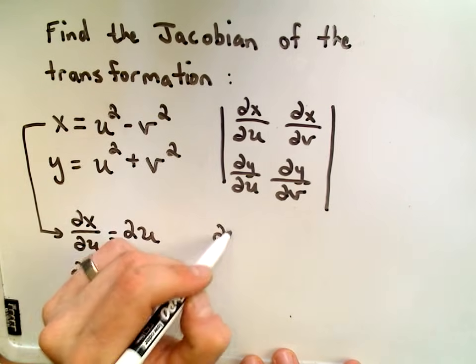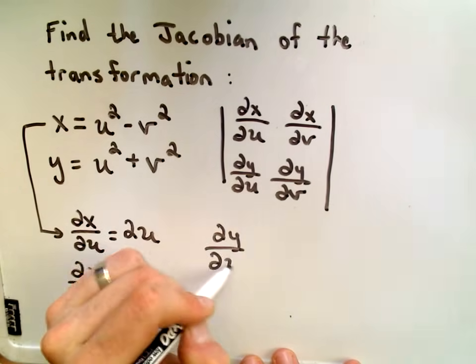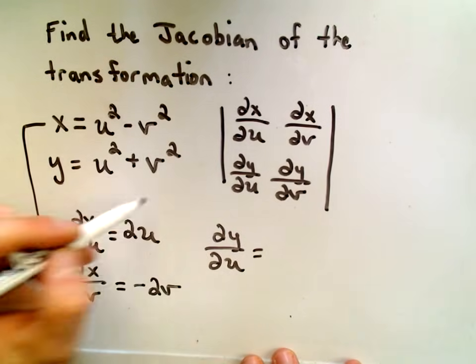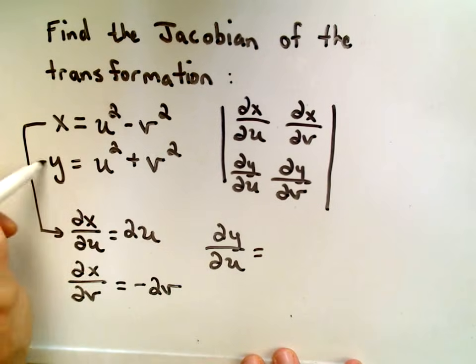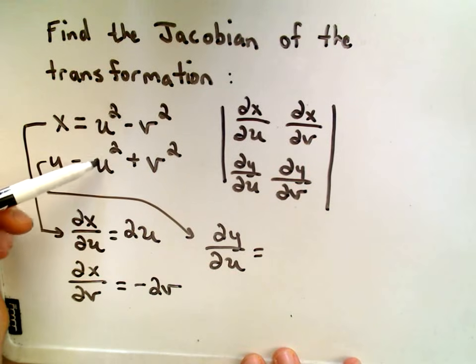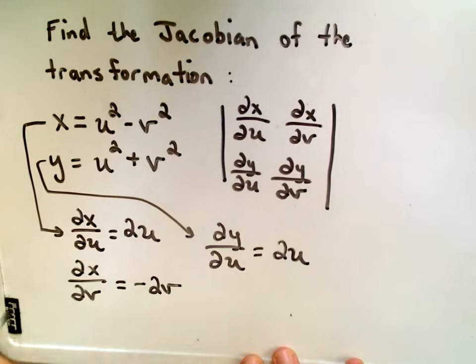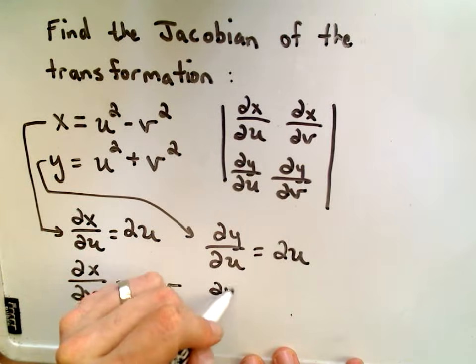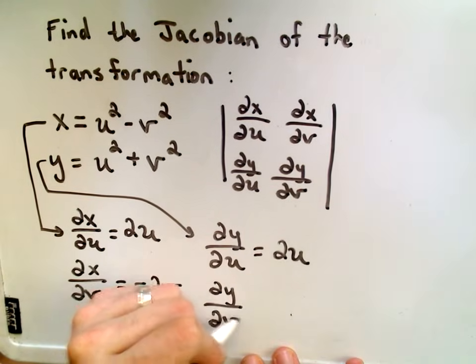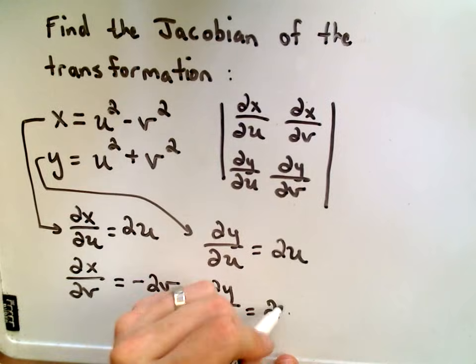We have to calculate the partial derivative of y with respect to u, so now I'm looking at the other one. If I take the partial derivative of y with respect to u, it looks like to me I'm going to get 2u, and then when I take the partial derivative of y with respect to v, I simply am going to get 2v.